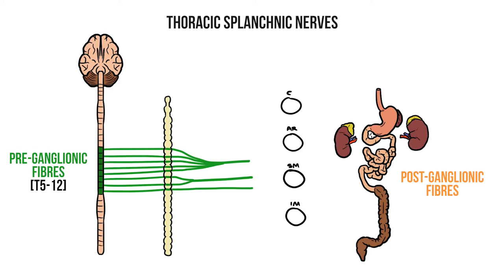Postganglionic fibres from these ganglia ultimately supply most of the abdominal viscera. And if you've already looked at the blood supply to these organs, you'll notice a very similar pattern. So the celiac ganglion innervates the foregut, superior mesenteric fibres go to the midgut, and the inferior mesenteric supplies the hindgut.